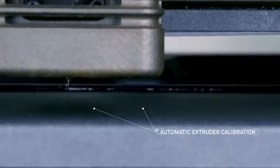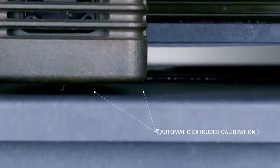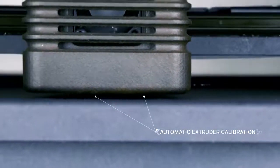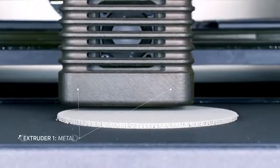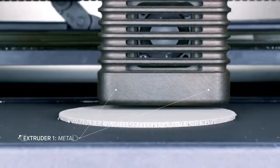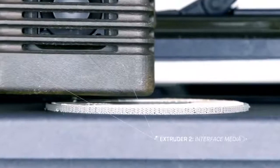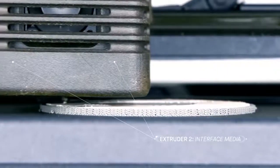The printer features automatic extruder calibration and bed leveling based on a software analysis of the parts to be printed. There are two extruders: one dedicated to printing metal, and the other for an interface layer printed between the part and its supports.